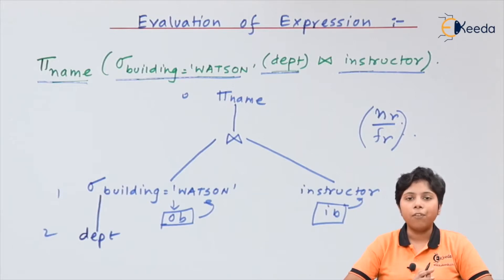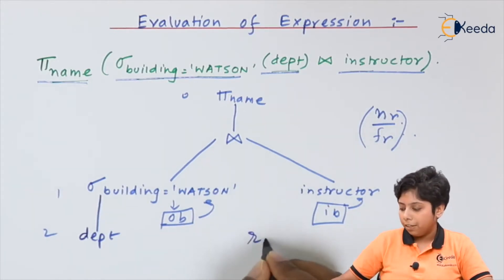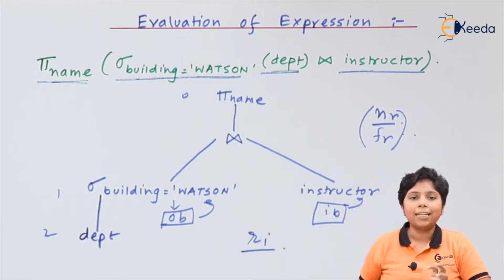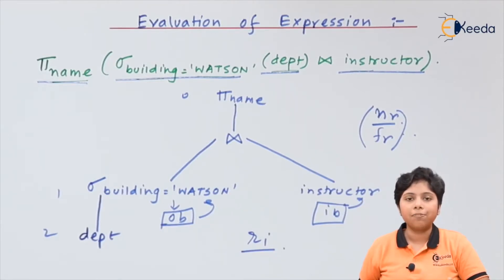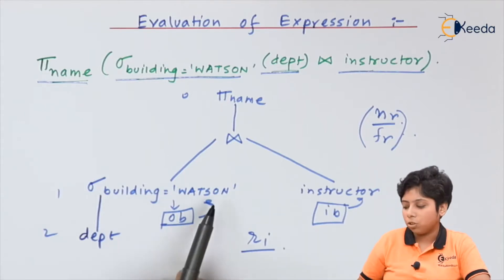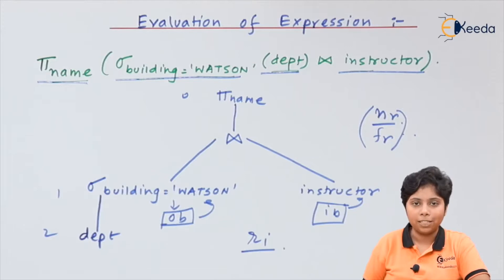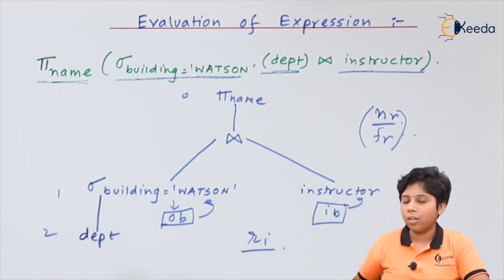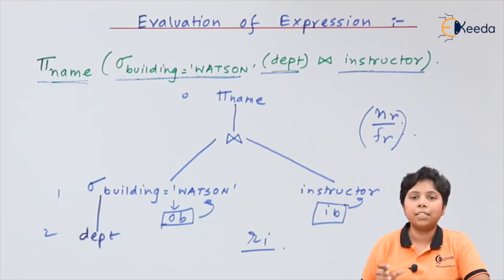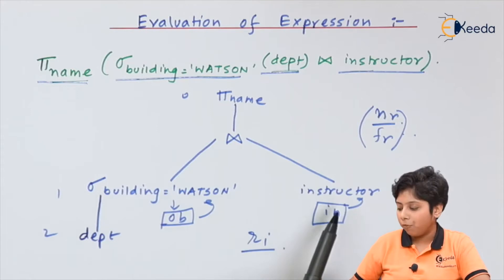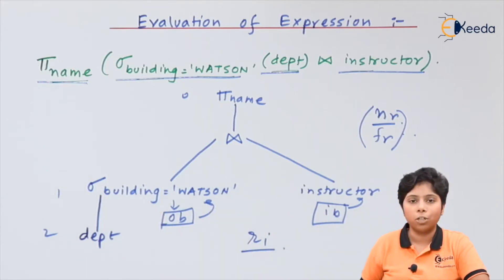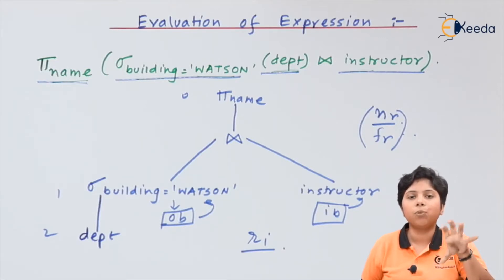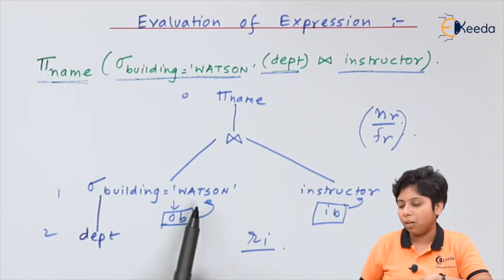In demand-driven pipelining, we start with a tuple ri. If ri satisfies all the attribute conditions — for instance, building equals Watson — we get ri number of tuples. From ri, we select which tuples to assign to instructor; for example, if instructor also has an operation like instructor_id equals 501, we perform it simultaneously with building equals Watson. That is the main concept of pipelining.